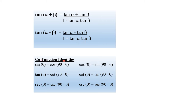Now co-function identities: sin theta equals cos(90 minus theta), cos theta equals sin(90 minus theta), tan theta equals cot(90 minus theta), csc theta equals sec(90 minus theta), sec theta equals csc(90 minus theta), cot theta equals tan(90 minus theta).